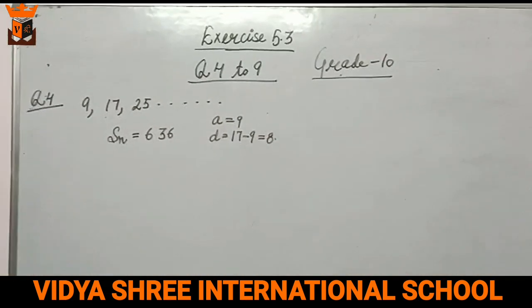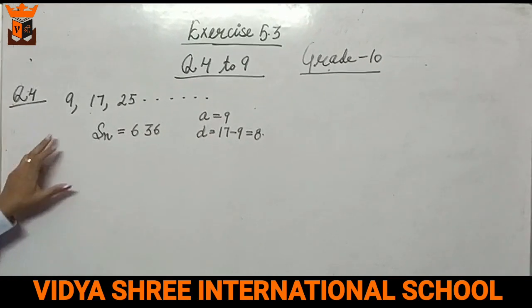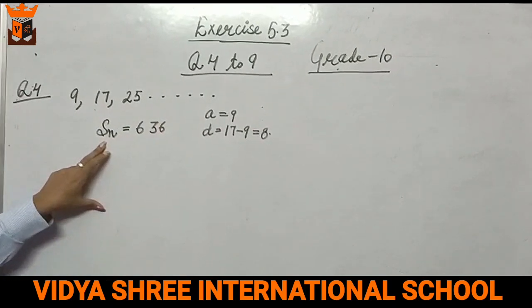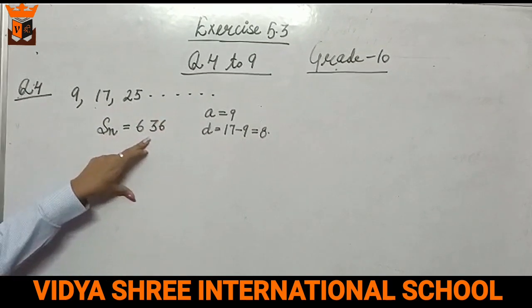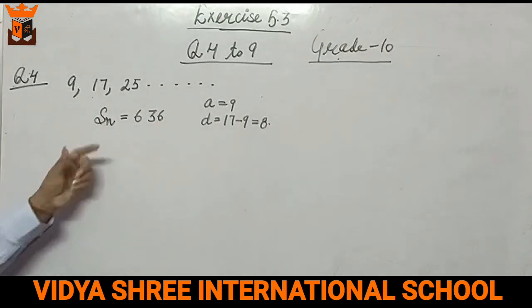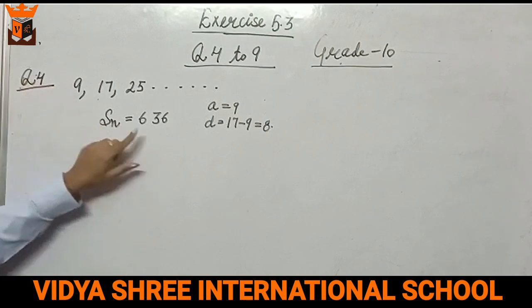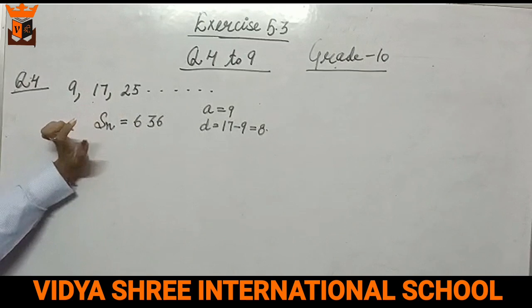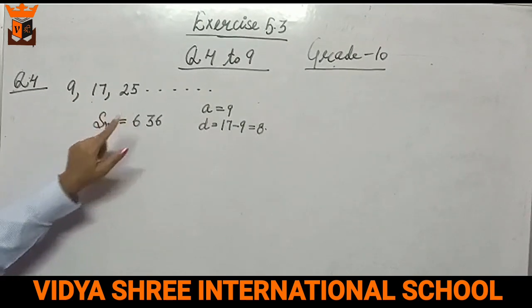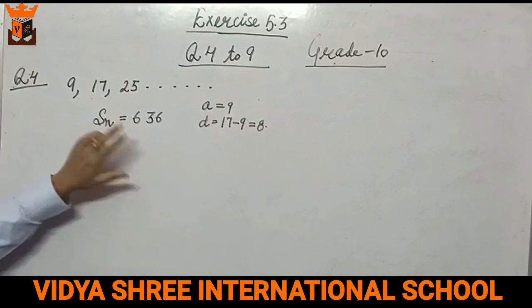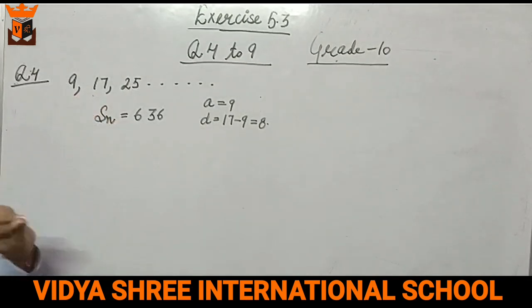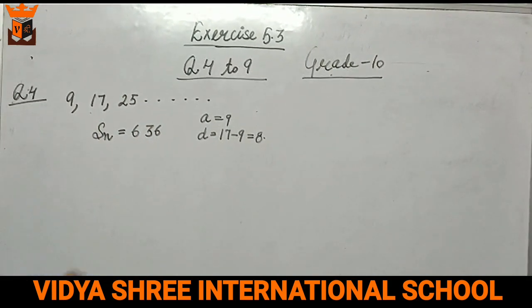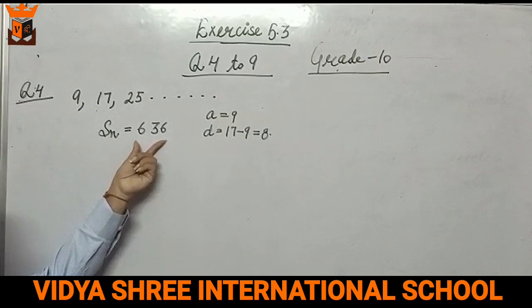All basic concepts we have already discussed. So this is the series 9, 17, 25, and the sum of n terms is given, that is 636. What is the statement? The statement is that if we want the sum of this series to be 636, how many terms should be there? Like 3 terms are given, so we have to find how many terms to add to get the sum 636.